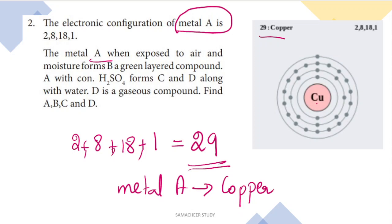So metal A is copper. Now we have to answer the next part of the question.